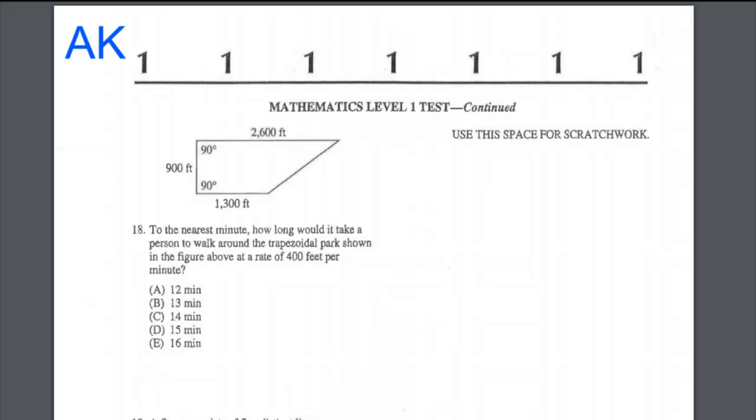Question number 18 is about a trapezoid. To the nearest minute, how long would it take a person to walk around the trapezoidal park shown in the figure, at the rate of 400 feet per minute? First, we need to find the length of the right-hand side leg of the trapezoid. Making a construction, that horizontal part is 900, and by the Pythagorean theorem we can find that leg using 1300 squared plus 900 squared.